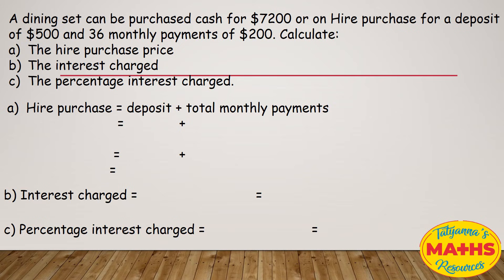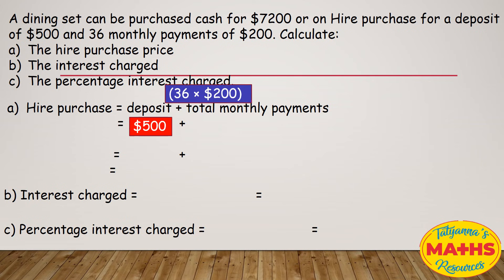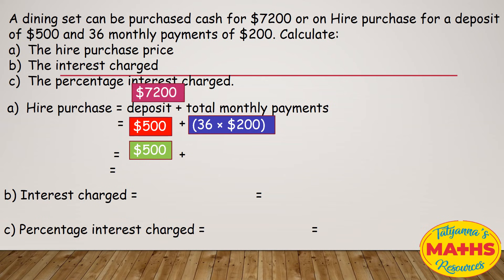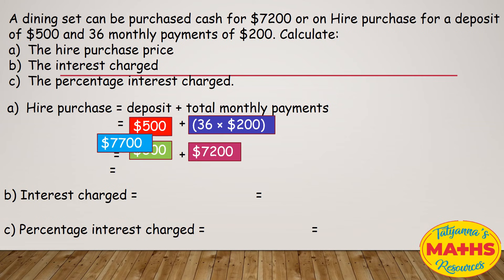So for hire purchase first, part A. Again we have our formula: deposit plus total monthly payments. In this question, the deposit is $500 plus $200 for 36 months. We need to work out 36 times $200, which gives us $7,200. Adding that to the deposit of $500, we get $7,700. You can check — the hire purchase of $7,700 is greater than the cash price of $7,200.